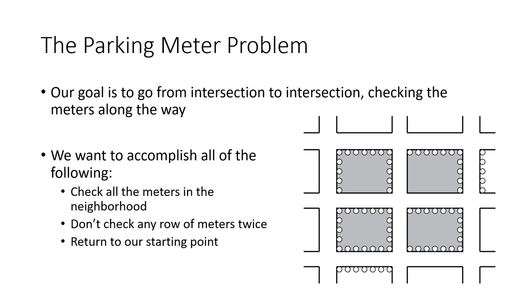We're going to go from intersection to intersection, and our goals are to do three things: check all of the meters in the neighborhood so we don't leave any unchecked; not duplicate effort — we don't want to check any row of meters twice; and return to our starting point.